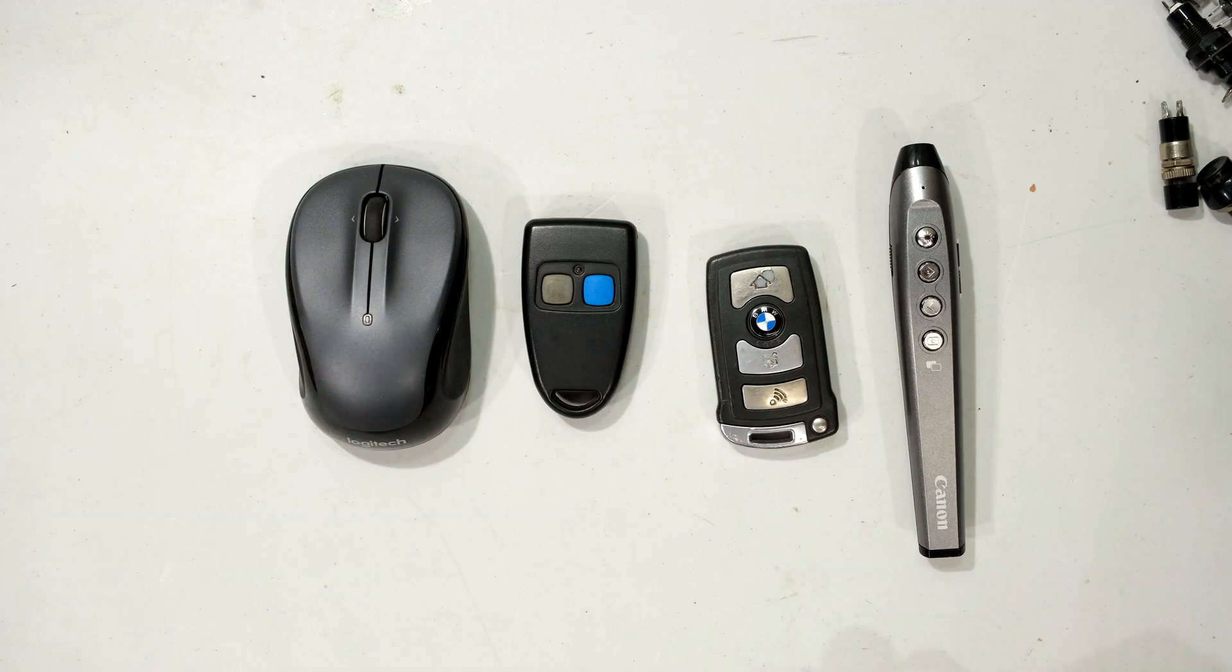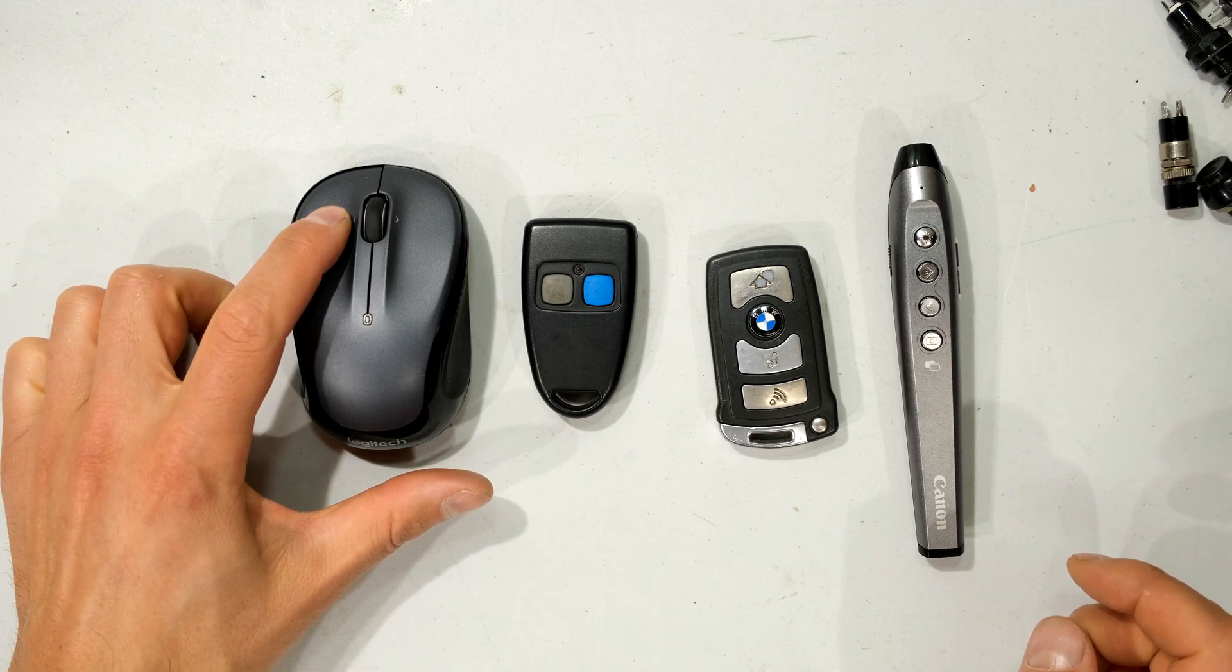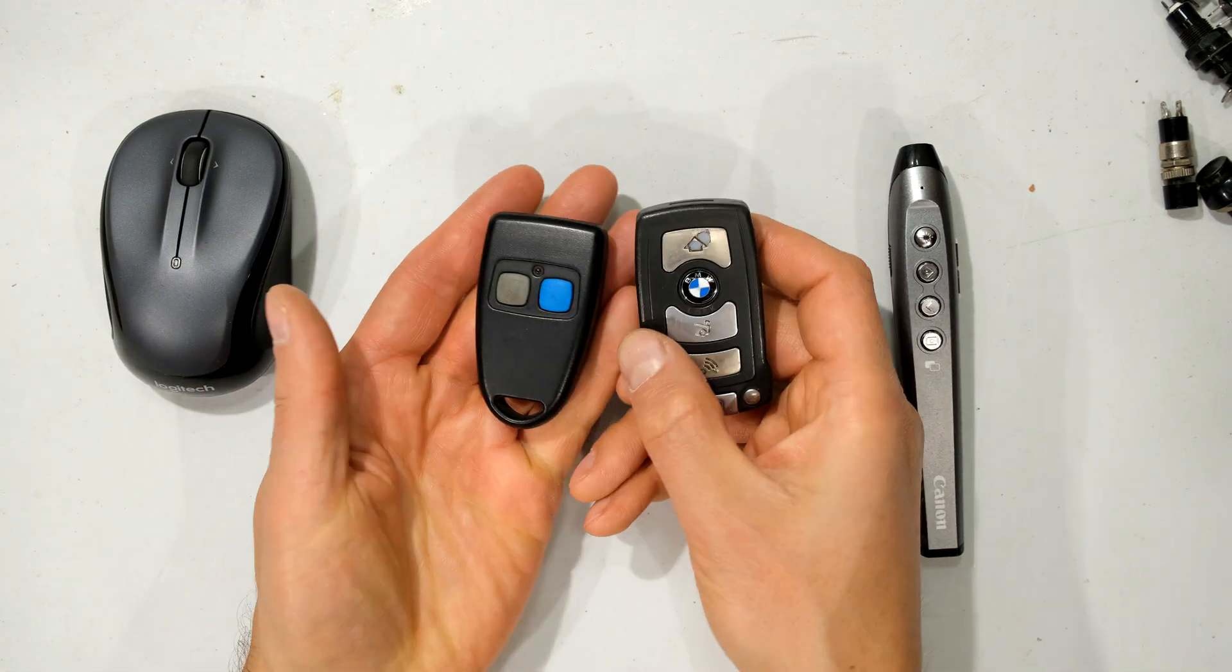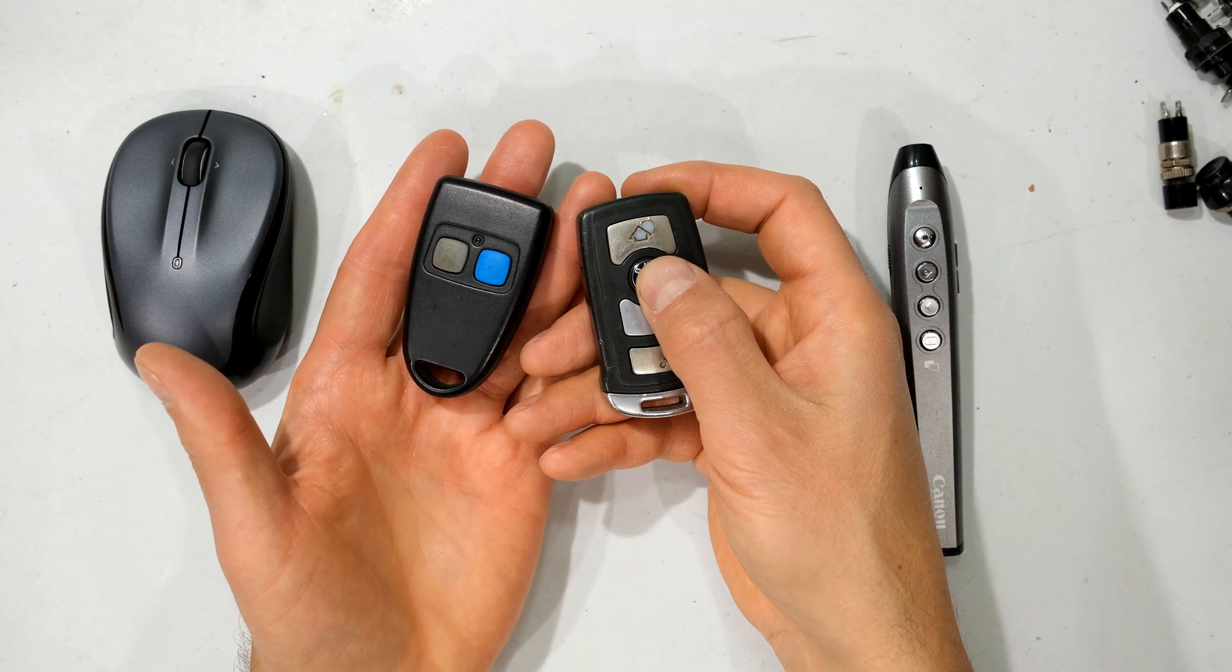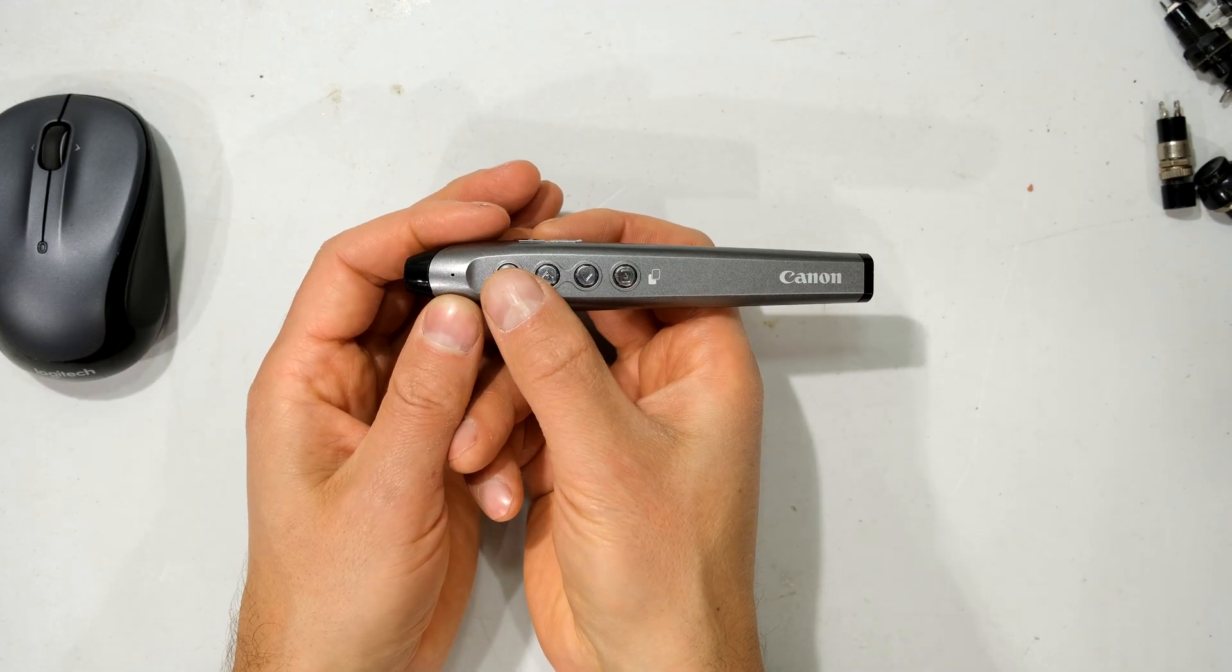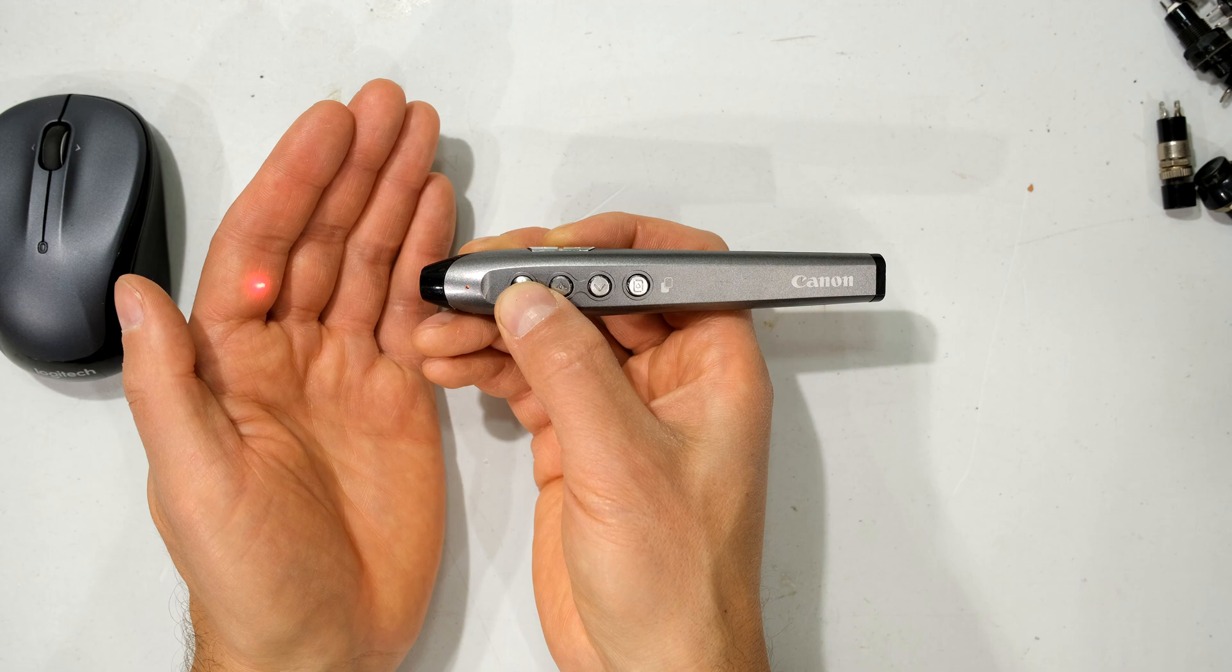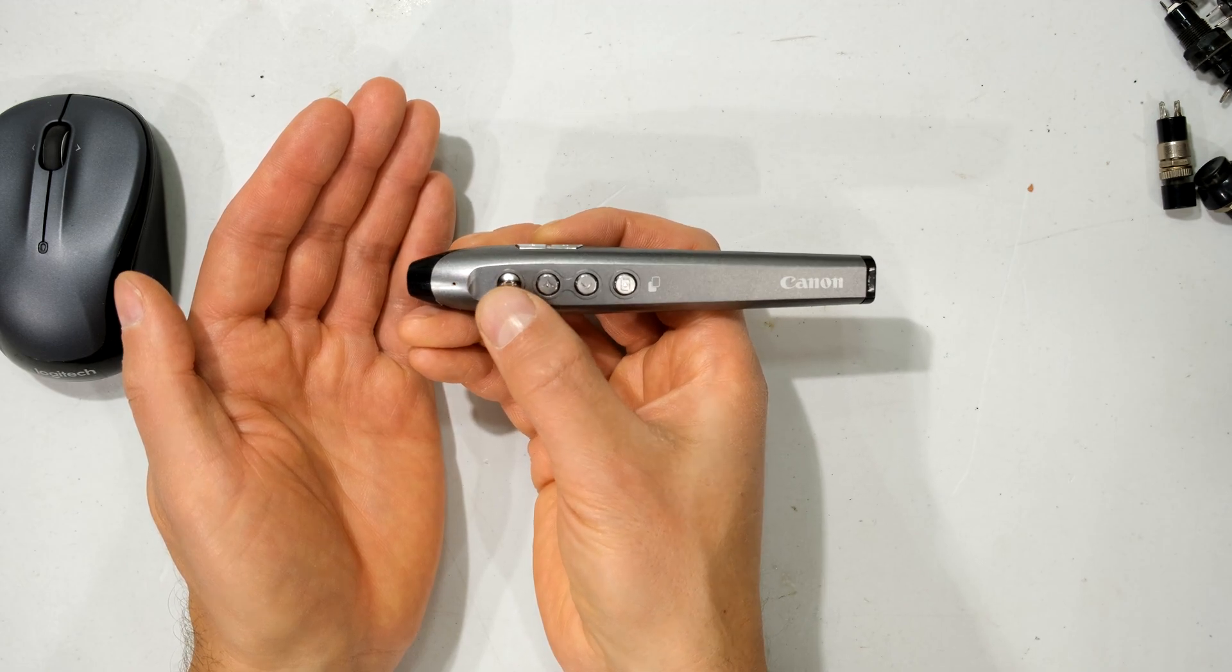Here are some examples of push to make switches which you have around your house. For example, your mouse. As you depress it, you're making contact. As you release it, you're breaking contact. Making, breaking. Same as your remote controls to operate your garage or your doors or your car. For example, when I depress the button, I'm making contact. When I release it, I'm breaking contact. Look at the laser pointer button. As I depress the button, you can see the laser shining on my hand. It's only on when I hold the button in. As I release it, the red light disappears. Appears. Disappears.